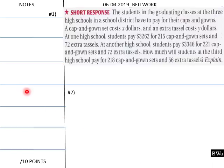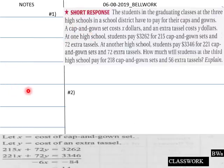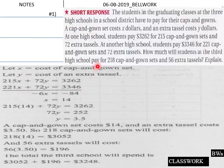Okay, welcome back. We're going to provide the solution here to our bell work. Here is your solution. Cost of cap and gown set. Cost of an extra tassel. So here is our setup here for our fees. And then we go through. We combine our two.